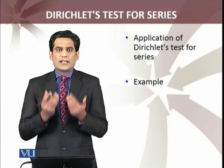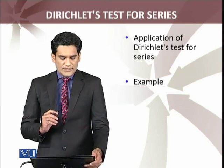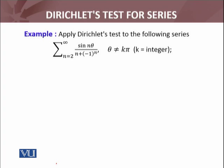We have to intelligently decide and pick an and bn. Let's see what we have in the example: apply Dirichlet test to the following series, summation n equals 2 to infinity sin nθ over n+(−1)^n, where θ is not equals to kπ where k is an integer. If θ is kπ, that will make the series zeros because sine of nπ is zero. Now we take an as 1 over n+(−1)^n and bn as sine nθ. So our series reduces to an·bn.